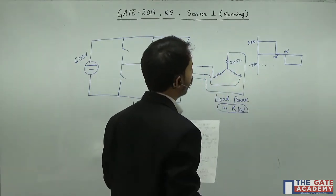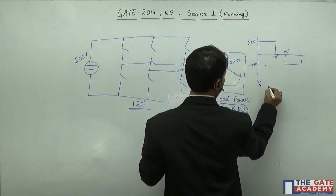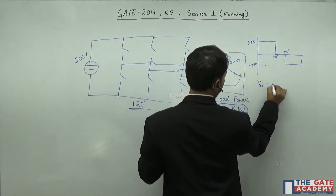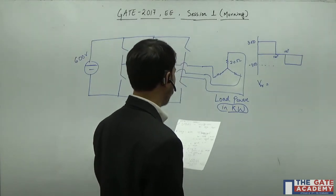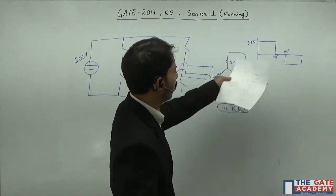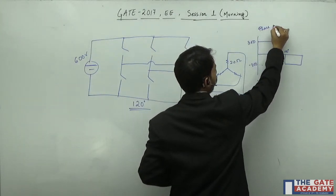And for this if we find out the output RMS value V_RMS per phase value. If you see, this is a phase diagram, this is a phase waveform, output phase waveform.